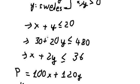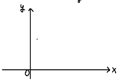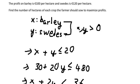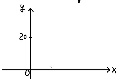For the first constraint, when x equals zero, y equals 20. And when y equals zero, x equals 20. So the graph should look like this.